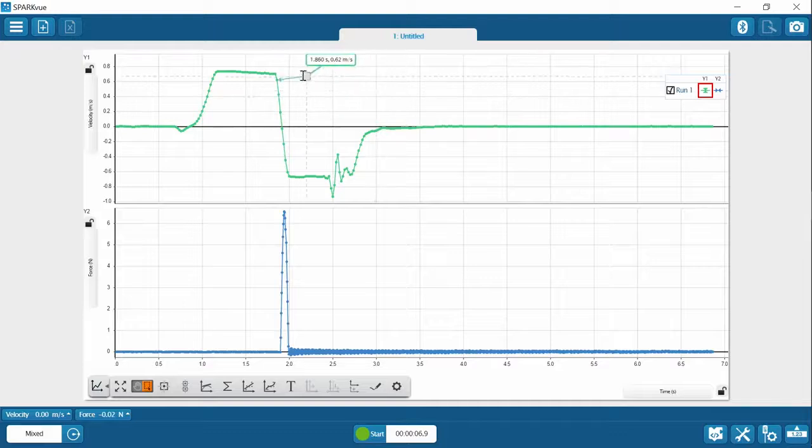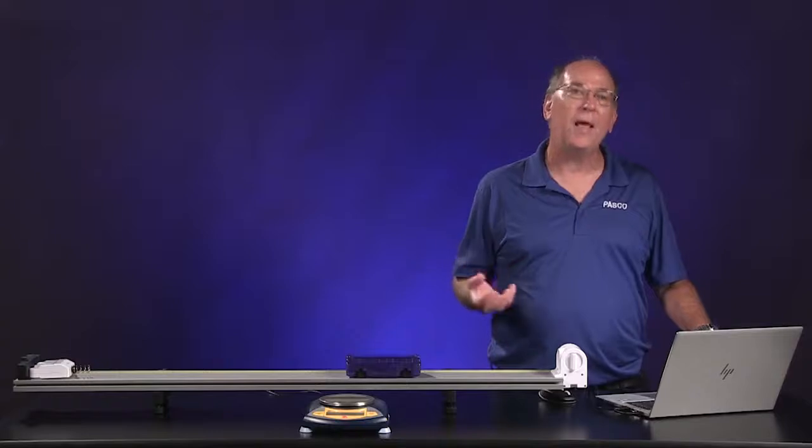I just use the coordinate tool. Just before the collision, the velocity was 0.7 meters per second and just afterwards, it's negative 0.67 and so the change in velocity is going to be negative.